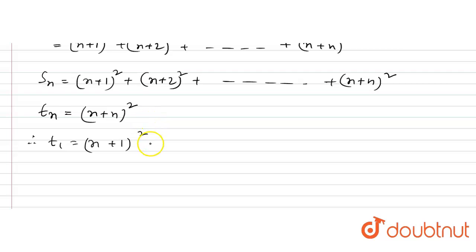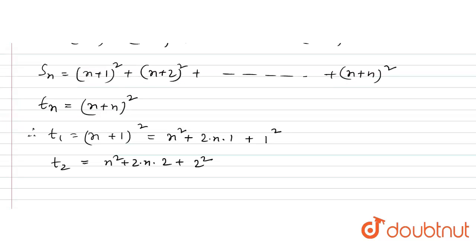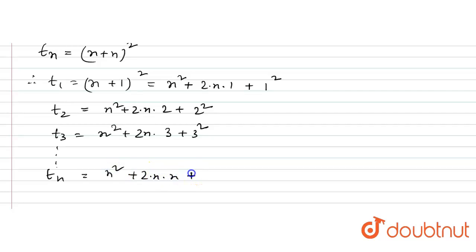t_1 equals (n+1)² which expands to n² + 2·n·1 + 1². t_2 equals n² + 2·n·2 + 2². Then t_3 equals n² + 2·n·3 + 3². So the general term t_n equals n² + 2·n·r + r².